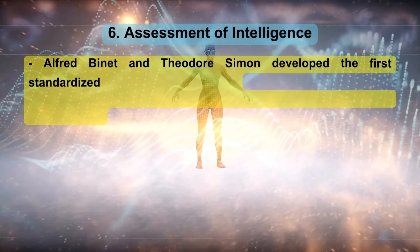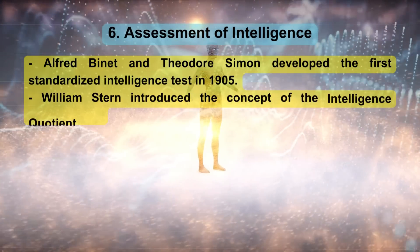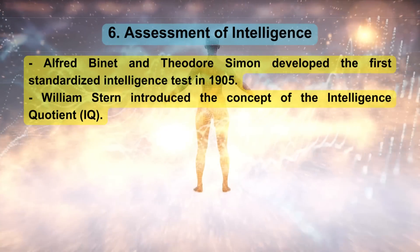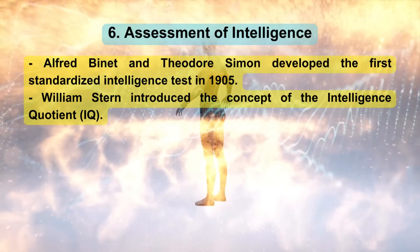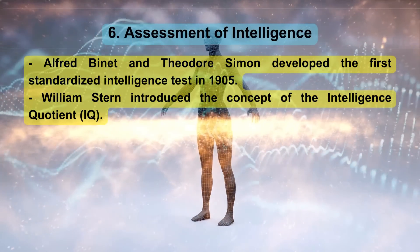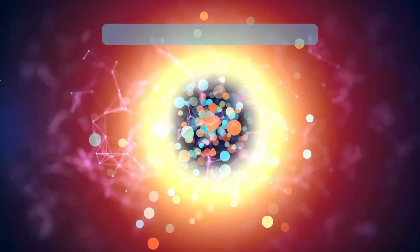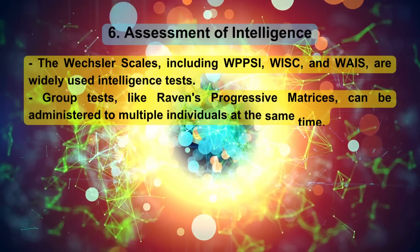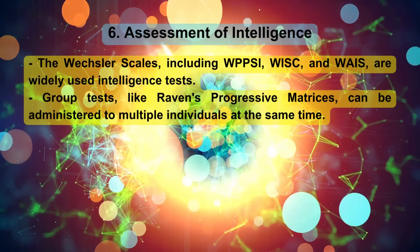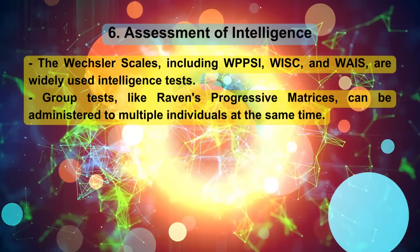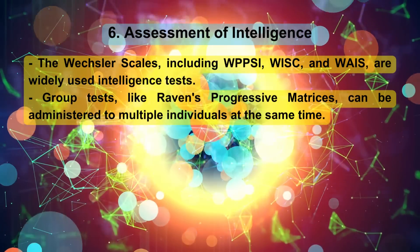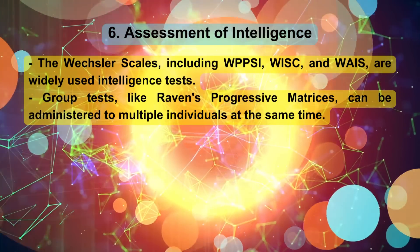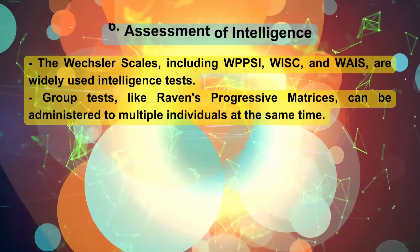Assessment of Intelligence: Alfred Binet and Theodore Simon developed the first standardized intelligence test in 1905. William Stern introduced the concept of the intelligence quotient (IQ). The Wechsler scales, including WPPSI, WISC, and WAIS, are widely used intelligence tests. Group tests, like Raven's Progressive Matrices, can be administered to multiple individuals at the same time.